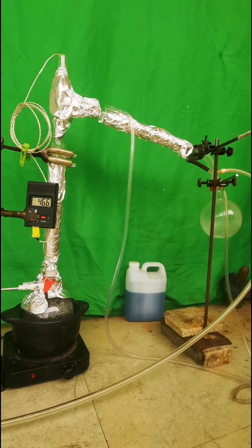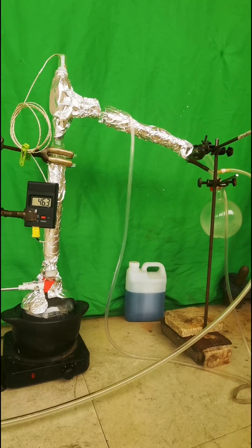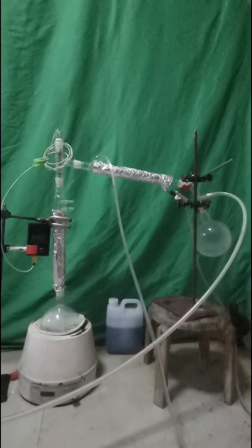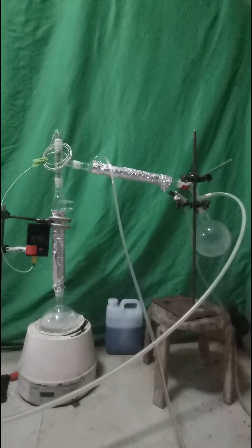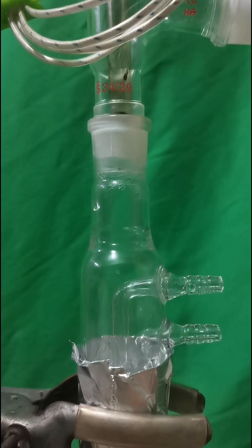About 10 minutes later, water appears in the receiving bottle. It's best to use aluminum foil to block the light. Light can drive hydrogen peroxide to decompose.